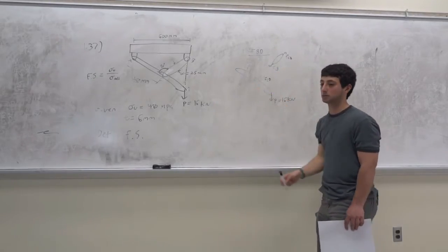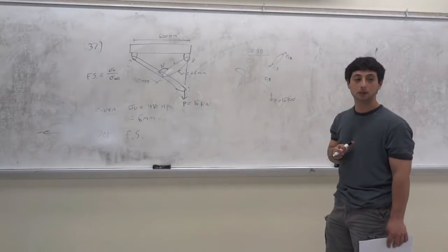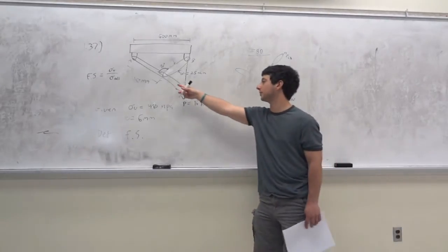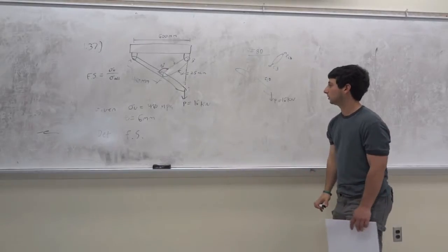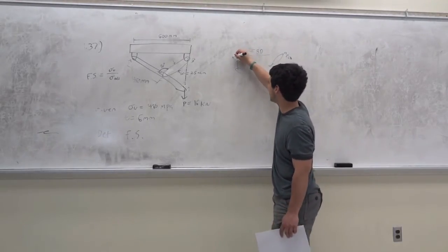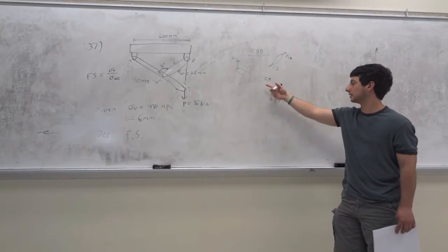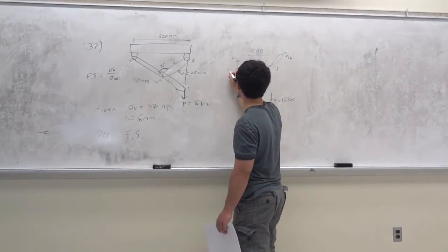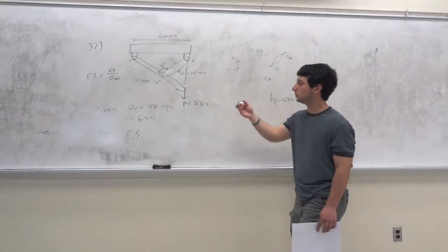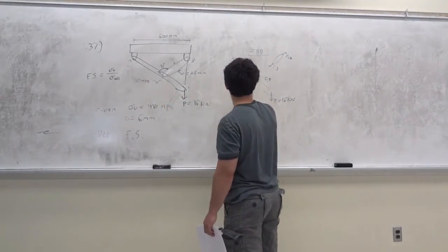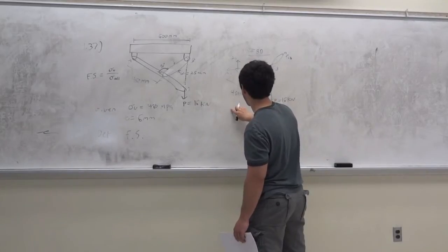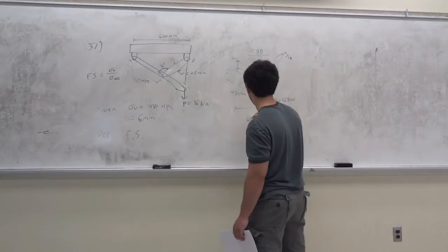What kind of reaction force do you expect at A? This isn't a two-force member — there's a force here, a force here, and a force here. There should be something that goes up — we'll call this A_Y. And there's an X component, so there has to be an A_X. This is a complete free body diagram of ACB and CB. They give you dimensions: 480 millimeters and 600 millimeters from A to force P.